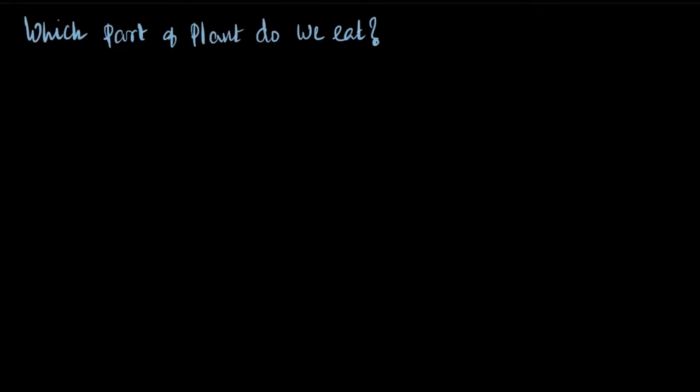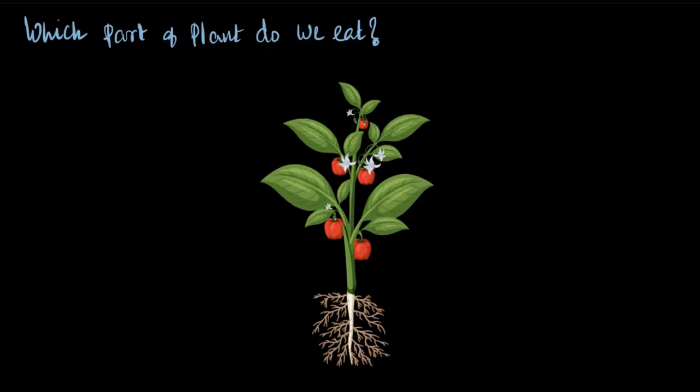Which part of the plant do we eat? We know that most of the food that we eat comes from the plant. We eat roots of some plants, we eat the stem of some other plants, we eat seeds, we eat flowers — these are different parts of plants that we consume as food, and various types of food are prepared using different parts of such plants. Let us see in some more detail with examples the parts of the plant that we consume as food.